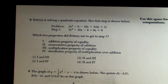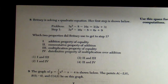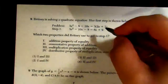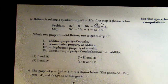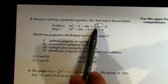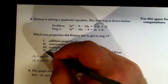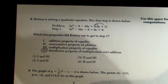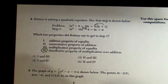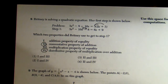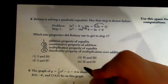Number 8: Britney is solving a quadratic equation and her first step is shown. Which two properties did she use? I see a parenthesis expanding into 6x + 9, which is the distributive property of multiplication over addition — she distributed the 3. Also, 10x and 8 switched sides of the equal sign, which is the commutative property. So choices 2 and 4 — it's choice 4.